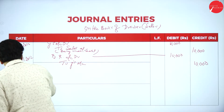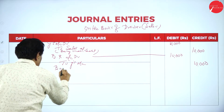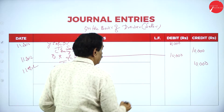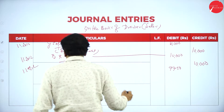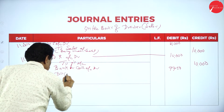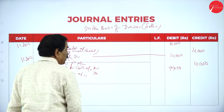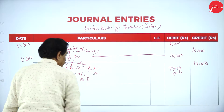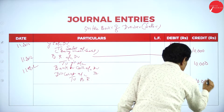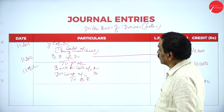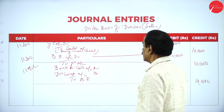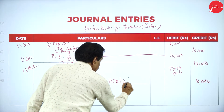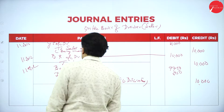9,750 received. Same date. Bank account: cash account debit 9,750. Discount account debit 250. To BR account 10,000. Being the bill discounted by X. Y's account debit 10,000, BR account debit to Y's account 10,000. Being the bill discounted.